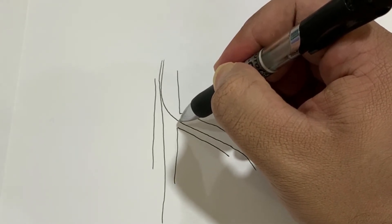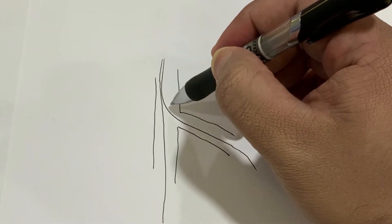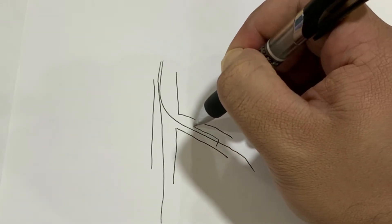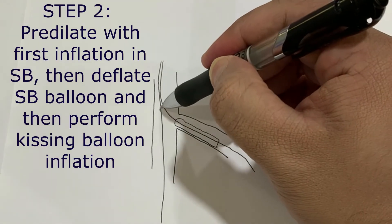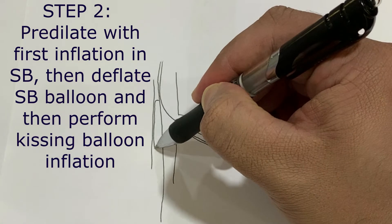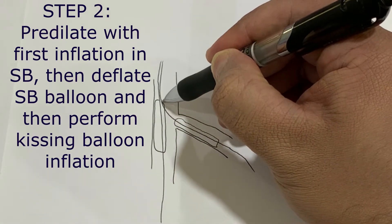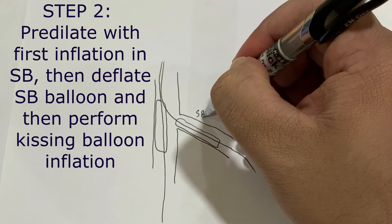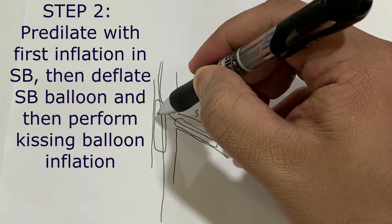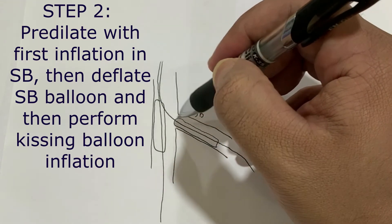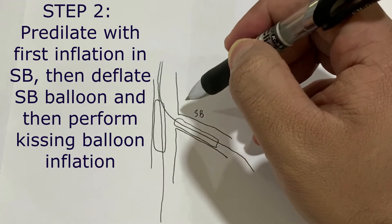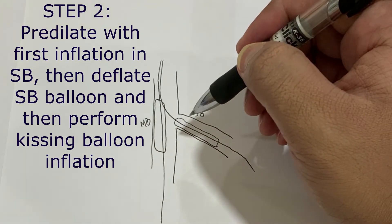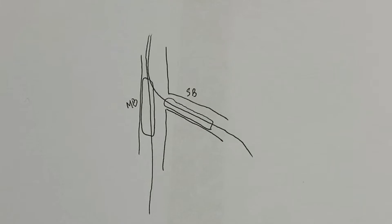Bring a compliant balloon if you are using a six french guide to this wire. Bring another balloon, preferably NC, on this wire. Inflate this balloon which is the side branch balloon first and then inflate this balloon. After that, once both balloons are inflated, deflate and then re-inflate for first kissing balloon.